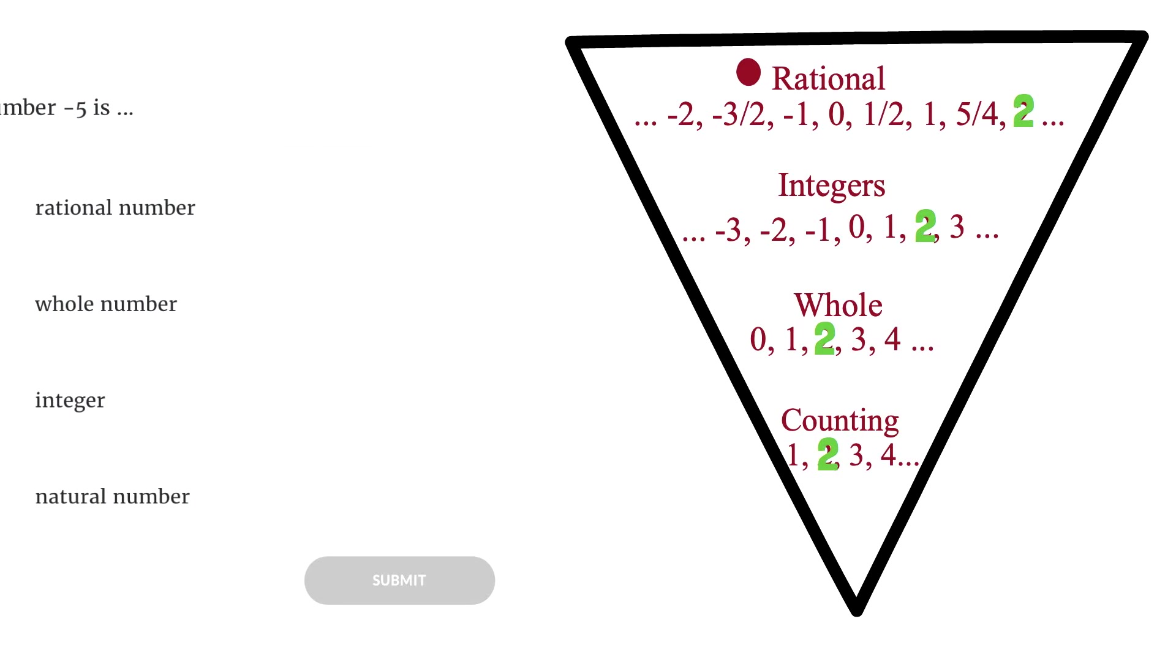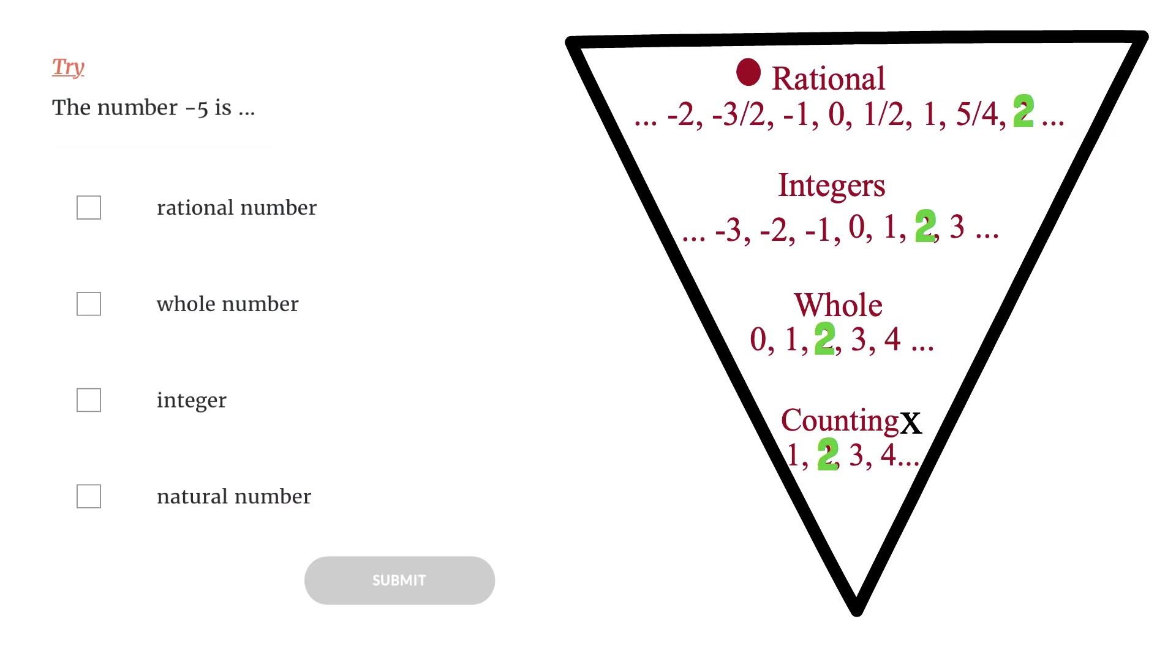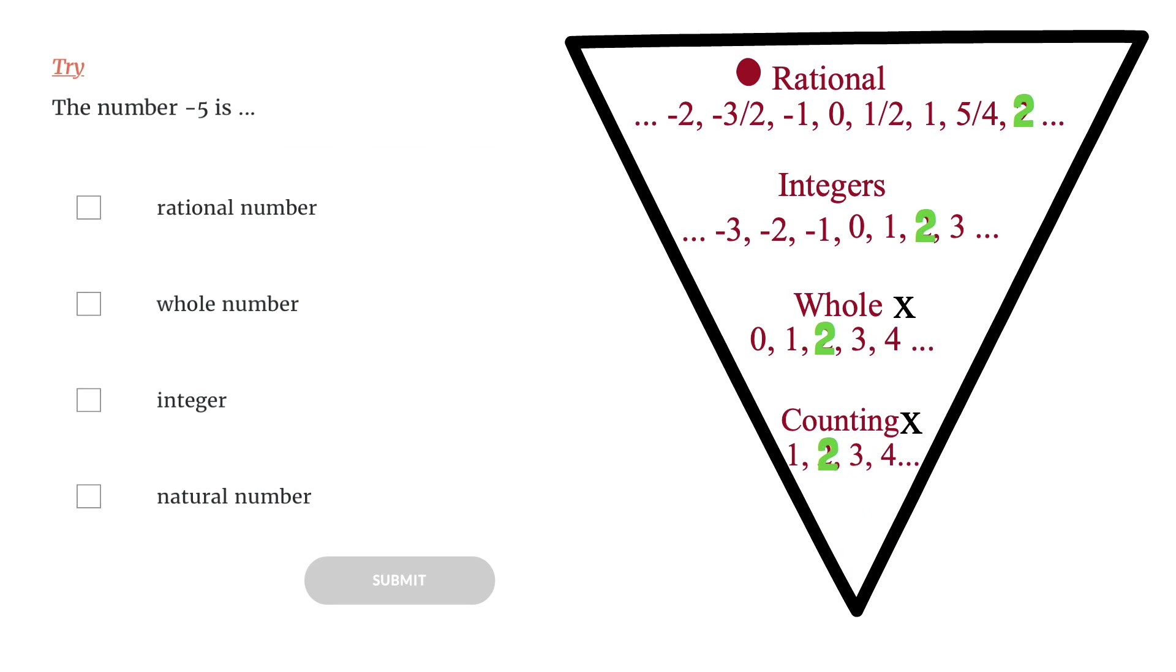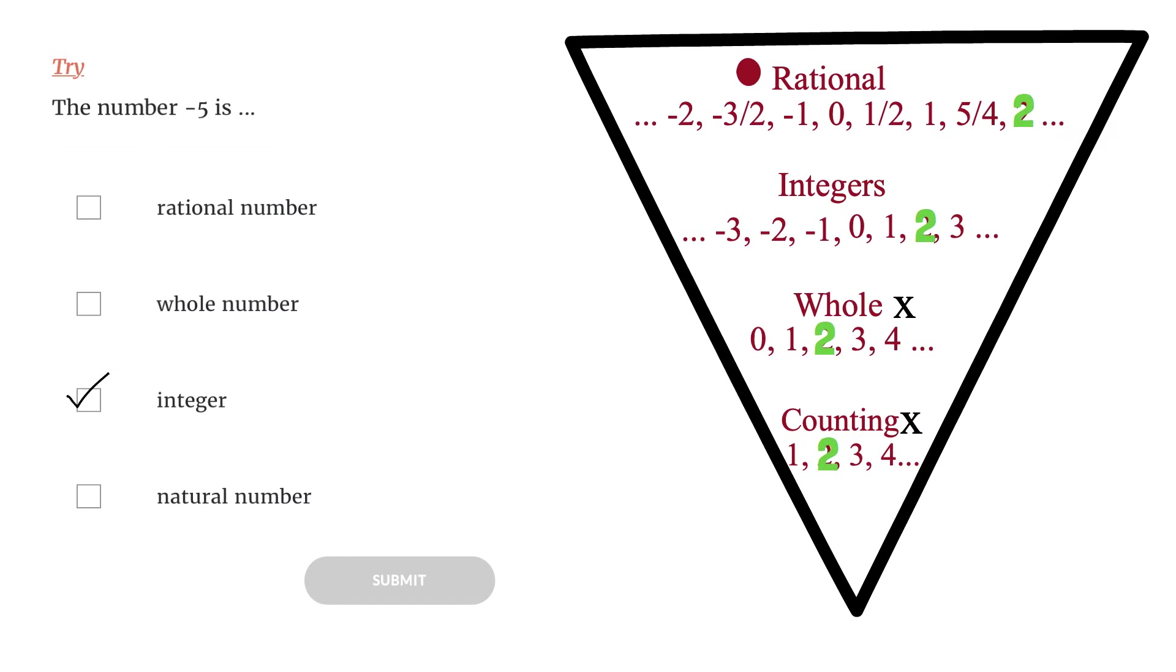Let's try negative 5. See if you can do it yourself. Negative 5 is not a natural number because natural numbers are 1, 2, 3, and so on. Negative 5 is not a whole number because whole numbers are 0, 1, 2, 3, and so on. Negative 5 is an integer. We know that negative counting numbers are integers. And negative 5 is a rational number.